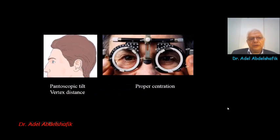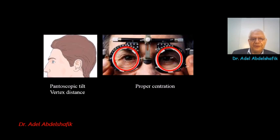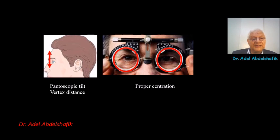First you need to properly centralize the trial frame in front of the patient's eye. You should also avoid any pantoscopic tilt of the trial frame and keep an eye on the vertex distance — the distance between the lenses and the cornea. This is especially important in high errors.